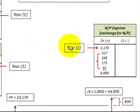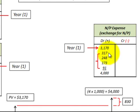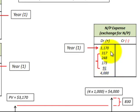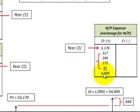So then again, at the beginning of year one, we record an expense of $3,170, which is the present value of that notes payable. Then at the end of each year, we record the expense that's associated with those payments. You add those interest expenses together with the present value of the notes payable, and you get a $4,000 total expense for that notes payable.